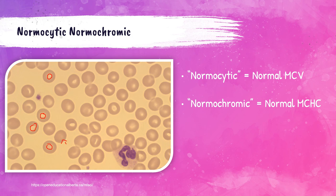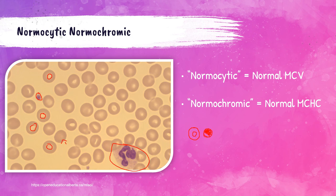If the MCHC value is decreased, the red blood cells will have an increased central pallor. These are normal looking red blood cells, along with a little platelet and a segmented neutrophil. A normochromic red blood cell will have a normal amount of central pallor. A hyperchromic cell is going to be basically all the way red — there's going to be no central pallor. A hypochromic cell is going to have a big area of central pallor.